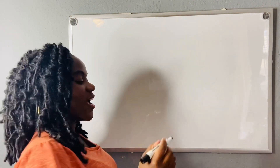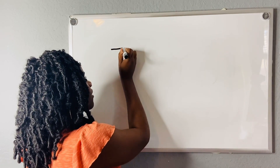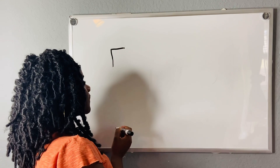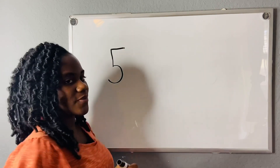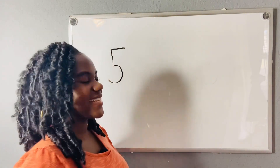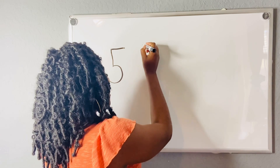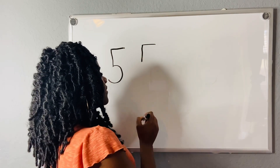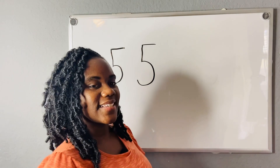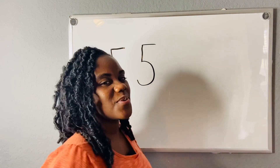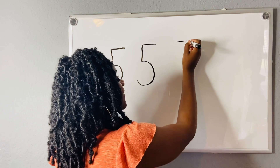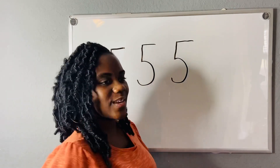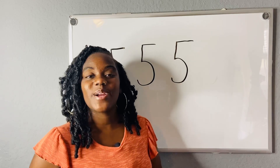So to write the number 5, you have to start with a line at the top going across to the right and stop. Then you are going to make a line going down and stop. Then you are going to make a curve. Let's try it again: start at the top, make a line going across, then a line going down, then make a curve. That is the number 5, and that is our number of the week.